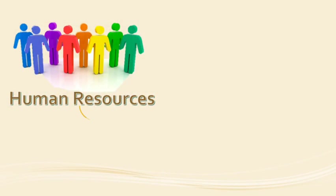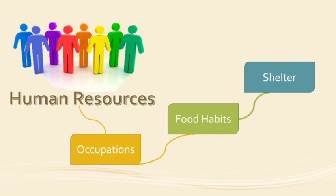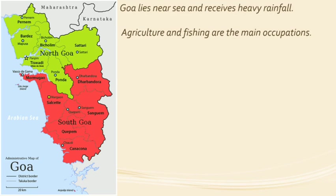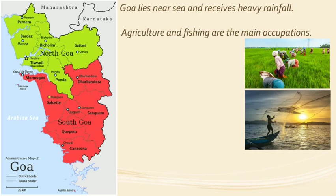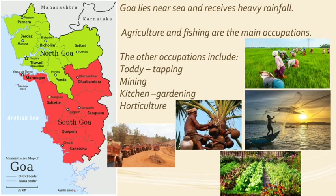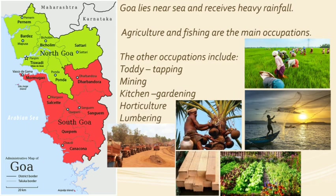Lastly, we shall learn about human resources of Goa. We shall learn about the occupations, food habits and shelter of the people living in Goa. Goa lies near the sea and receives heavy rainfall. Agriculture and fishing are the main occupations of the people in Goa. Other occupations include toddy tapping, mining, kitchen gardening, horticulture, and lumbering. The trade of cutting, preparing or selling timber is called lumbering.